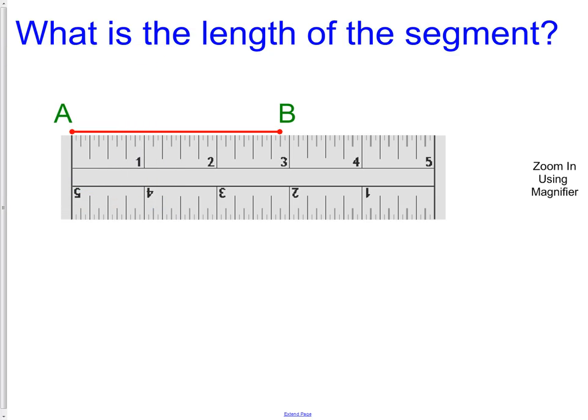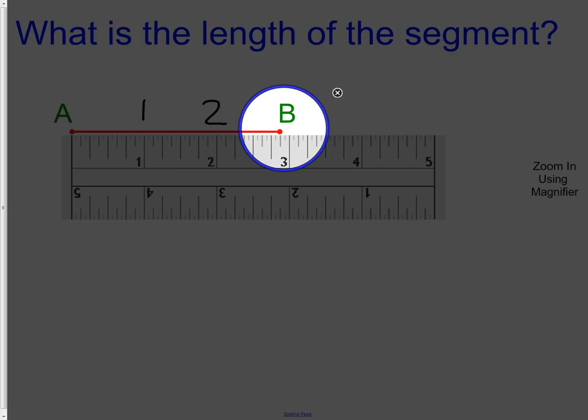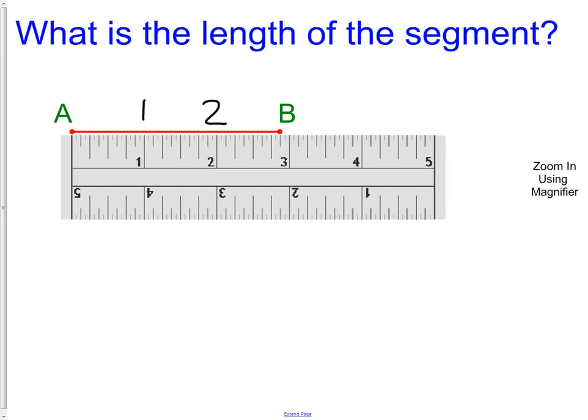So you will notice here, I start at the 0. I go 1 full, so here is 1, here is 2. So I have gone 2 full inches, but we did not make it all the way to the 3rd inch. We are close, but we did not make it all the way there. So now we need to realize, or look and see, how far did we actually make it.